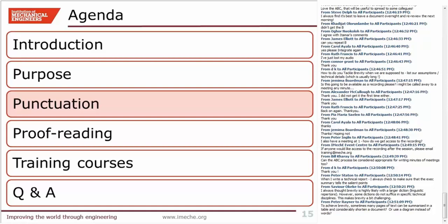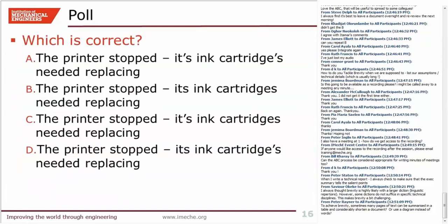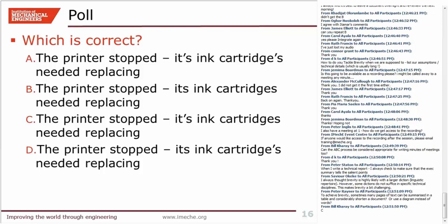Okay, so punctuation. Let's go back to the question I posed on the opening slide before we started. We should have a poll coming up. What we've got here is a simple sentence: 'The printer stopped. Its ink cartridges needed replacing.' Which one of these sentences uses apostrophes correctly?